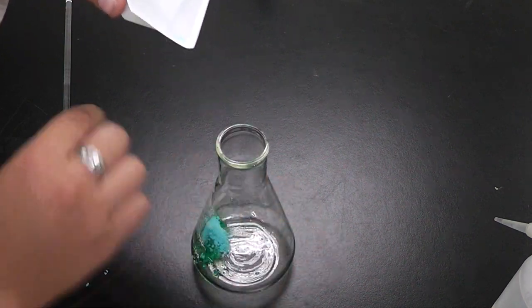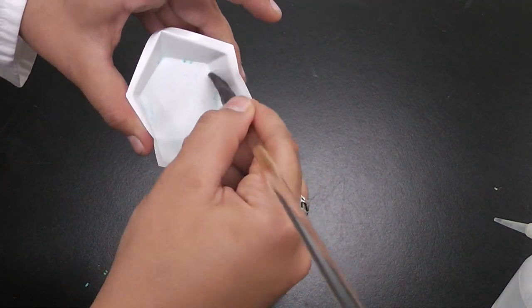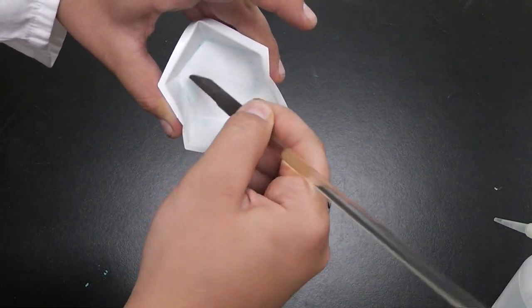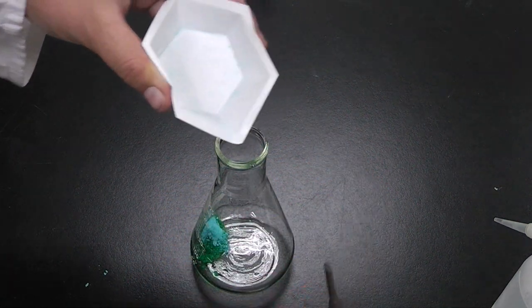Once that's finished, you simply take your rubber policeman and scrape as much as you can into the Erlenmeyer flask. Make sure that you scrape all the corners and the edges, getting all the sample into the Erlenmeyer flask.